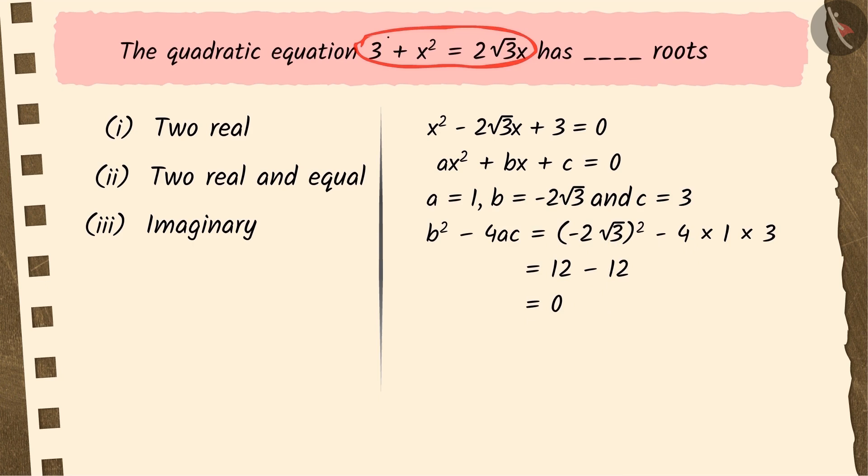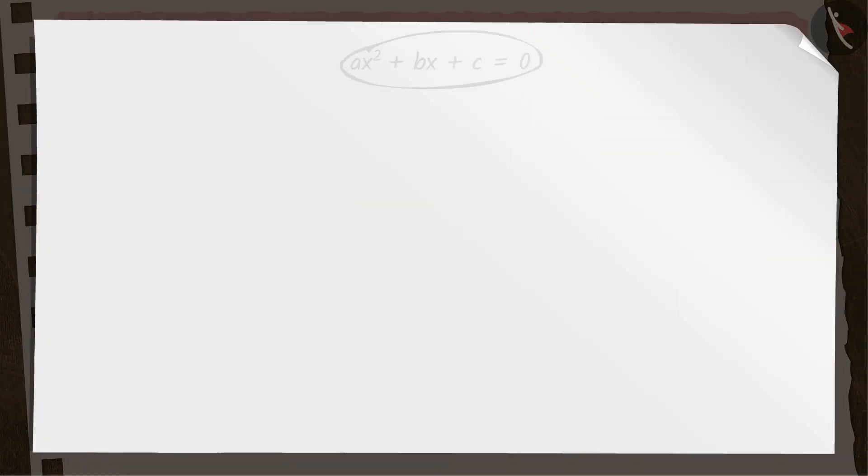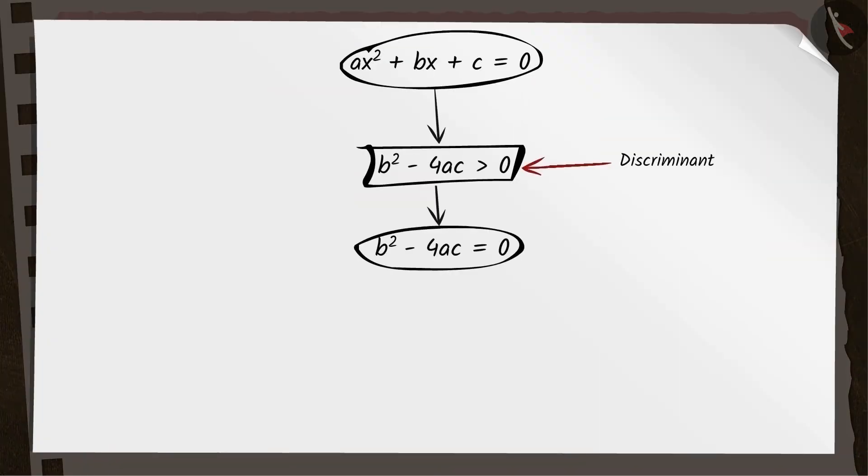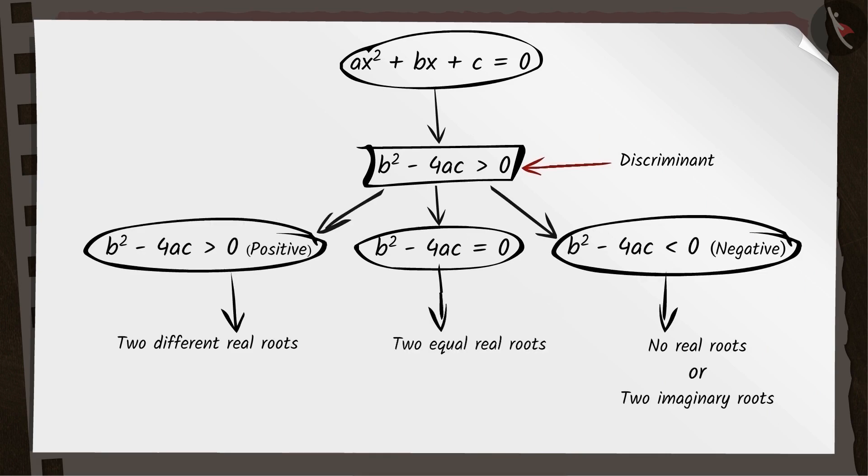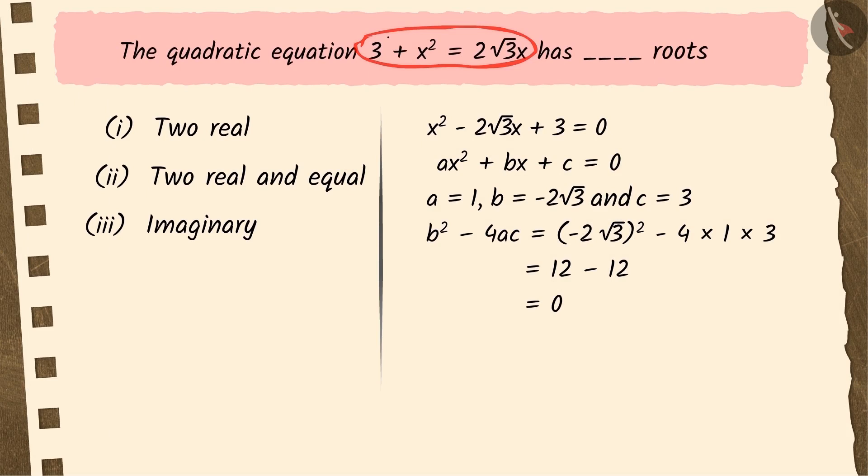We know that if the value of the discriminant of a quadratic equation is 0, then that equation has two equal real roots. Hence, Rekha's answer, that is option 2, is the correct answer.